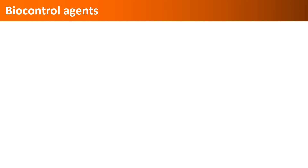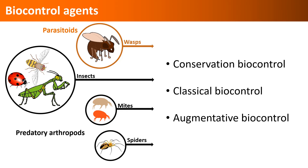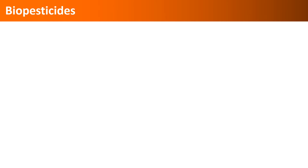Now we will quickly look at various biologicals. The first group is biocontrol agents. Parasitic wasps and various arthropod predators are used through conservation biocontrol, classical, or augmentative biocontrol strategies. Classical biocontrol is very effective for managing various invasive pests, and augmentative biocontrol is very popular in greenhouses or several open field production systems.